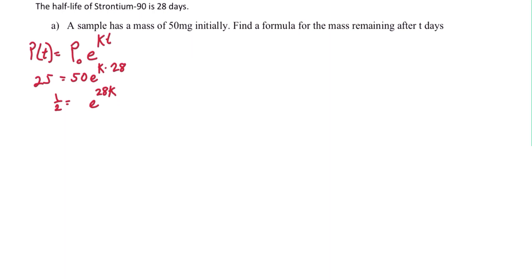In order to isolate k, we need to take the natural log of both sides. So natural log of 1 half equals 28k times the natural log of e.